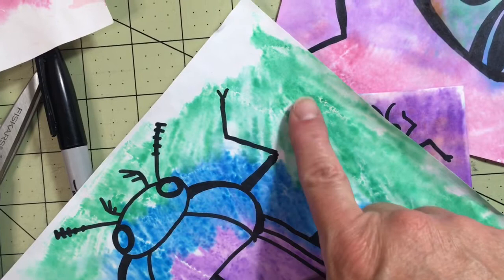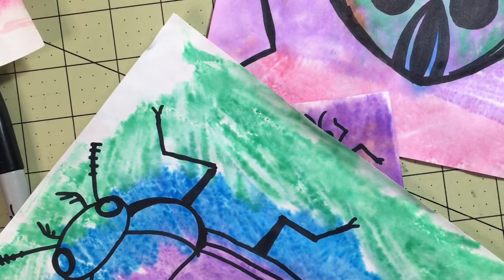You've probably noticed, depending on how much water you have on your plastic, you get different effects. Less water, you can still see lines. More water, the colors blend more like watercolor paint.